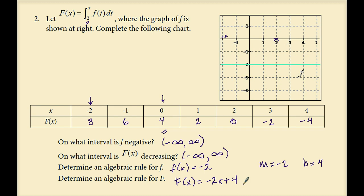Let's plot a few points to verify: at 0 we're at 4, at 1 we're at 2, at 2 we're at 0, at 3 we're at negative 2, at 4 we're at negative 4. You can see this is indeed a line with slope negative 2 and y-intercept 4.